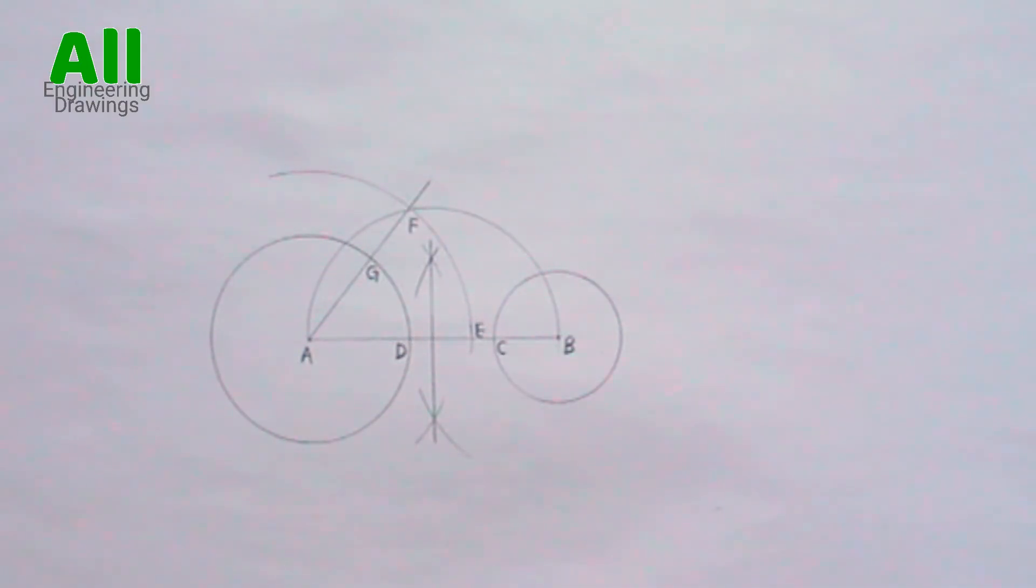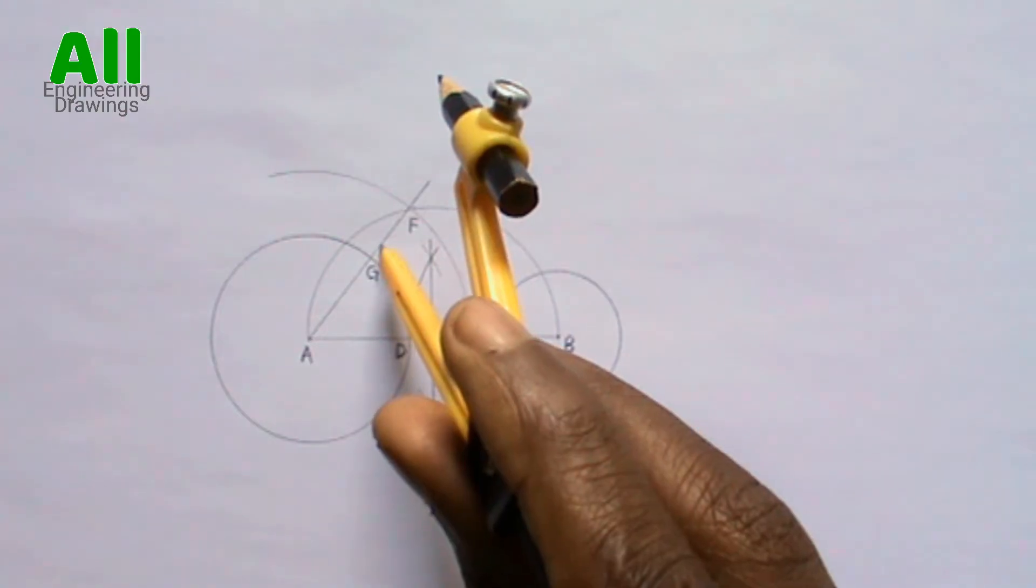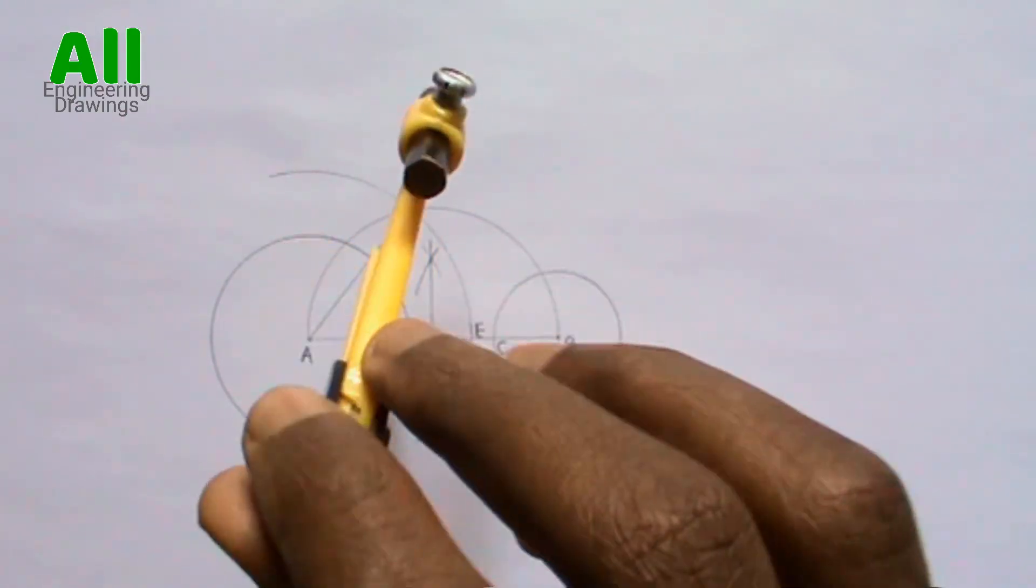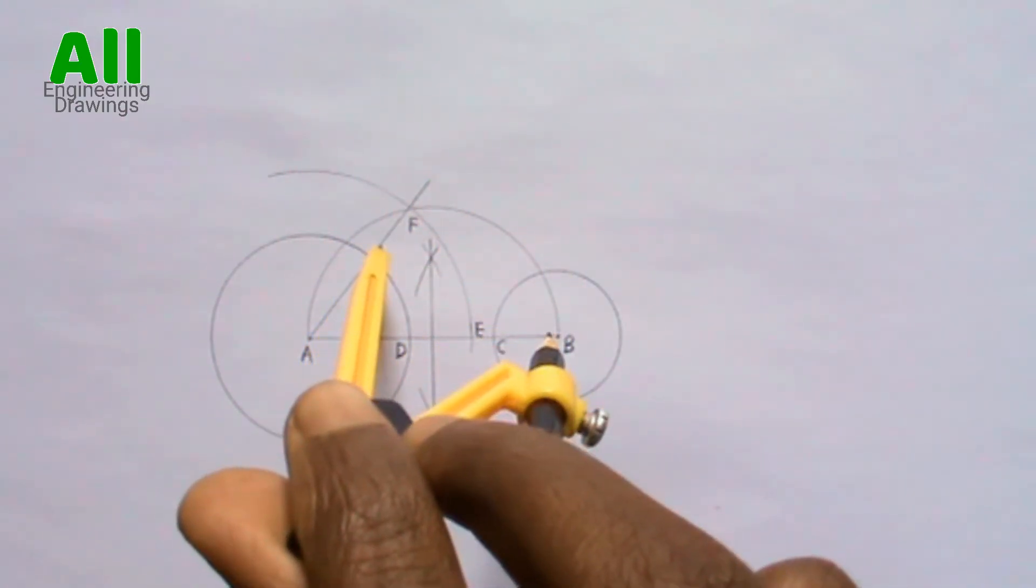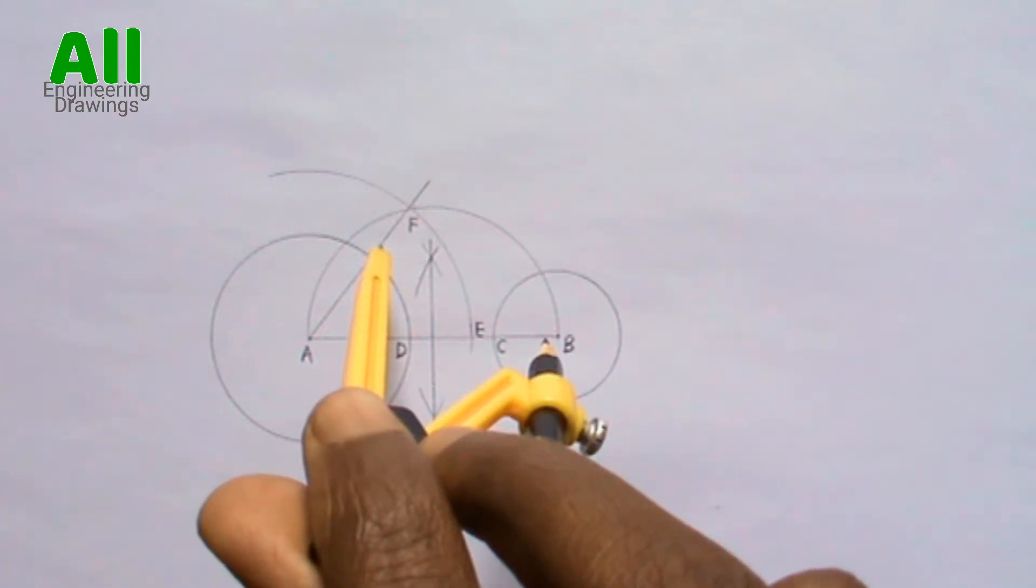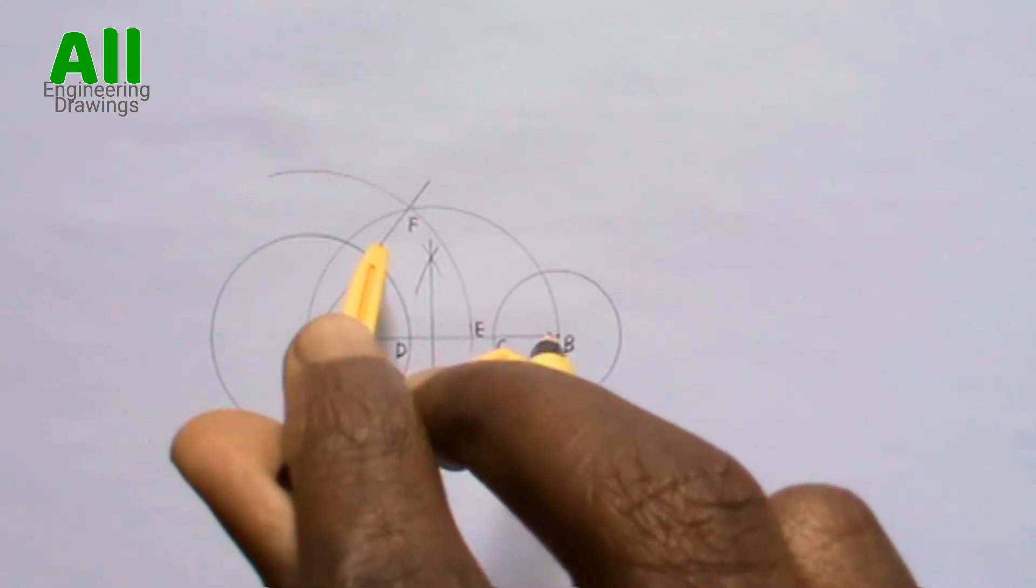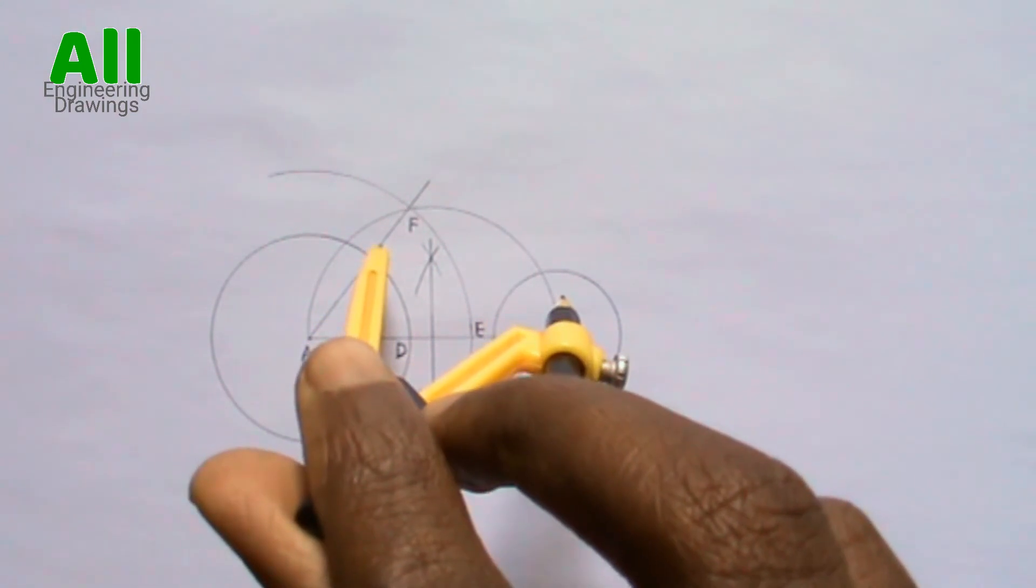Now place your compass on any suitable point on line AF, then cut an arc this way.